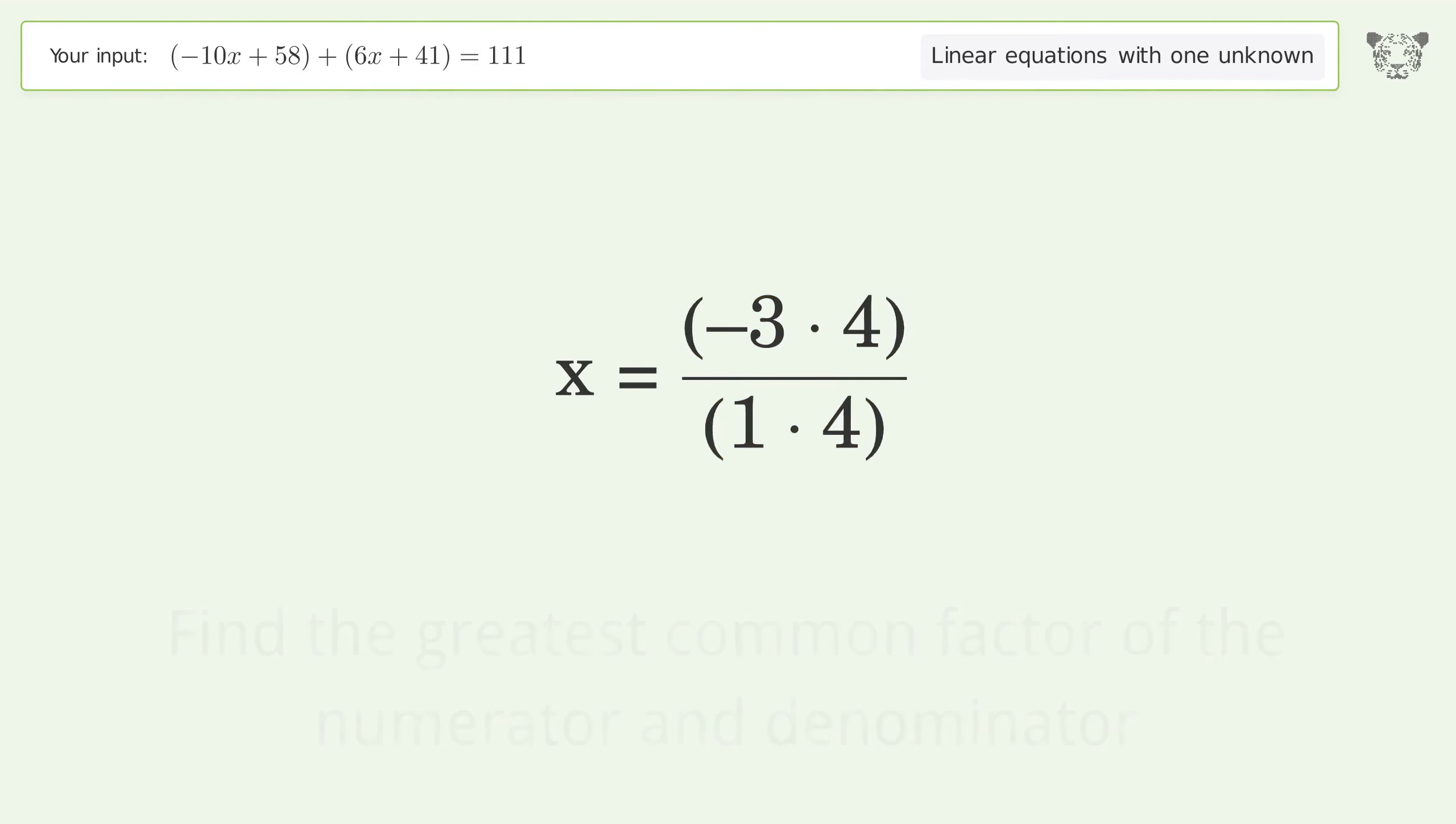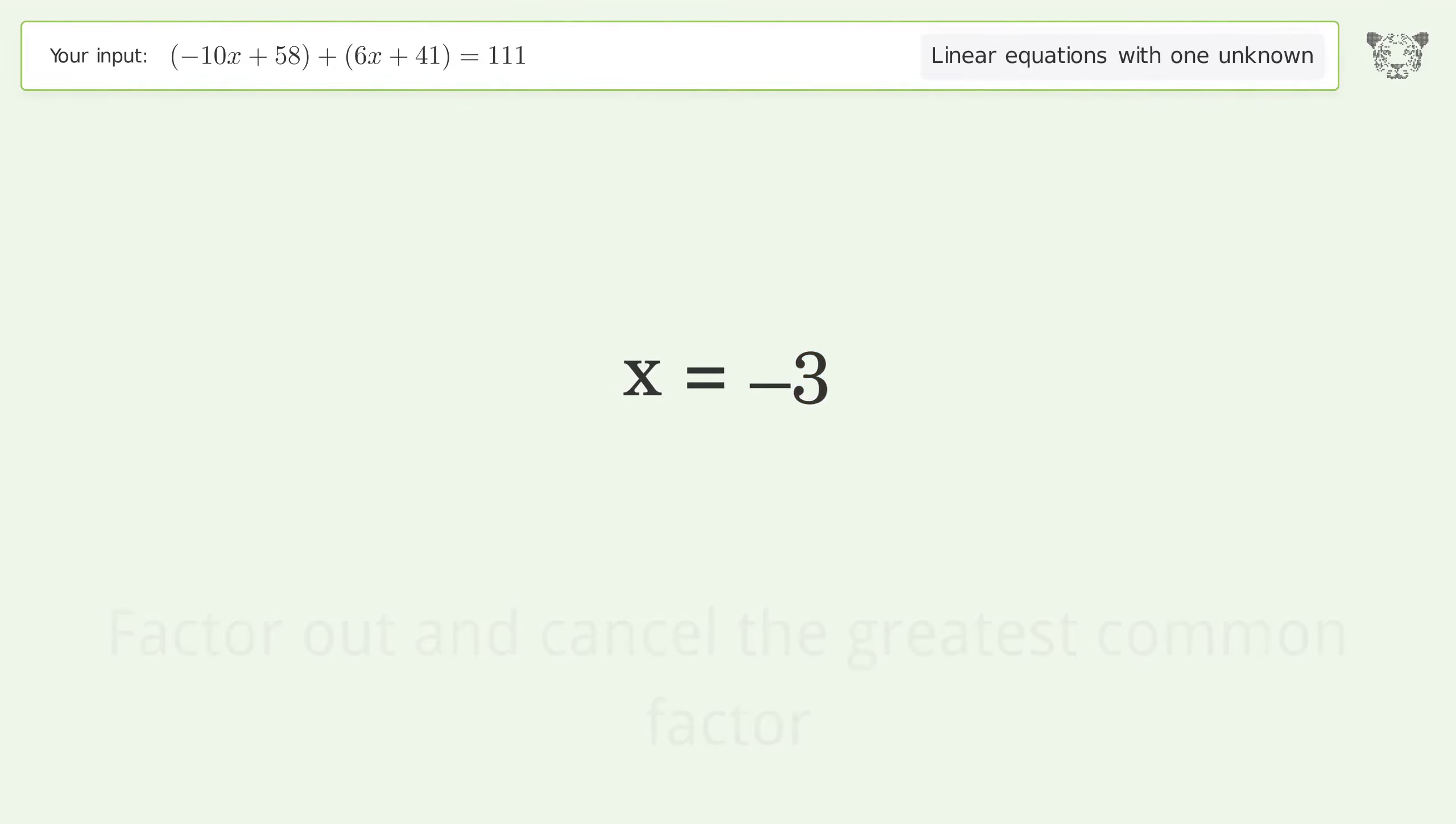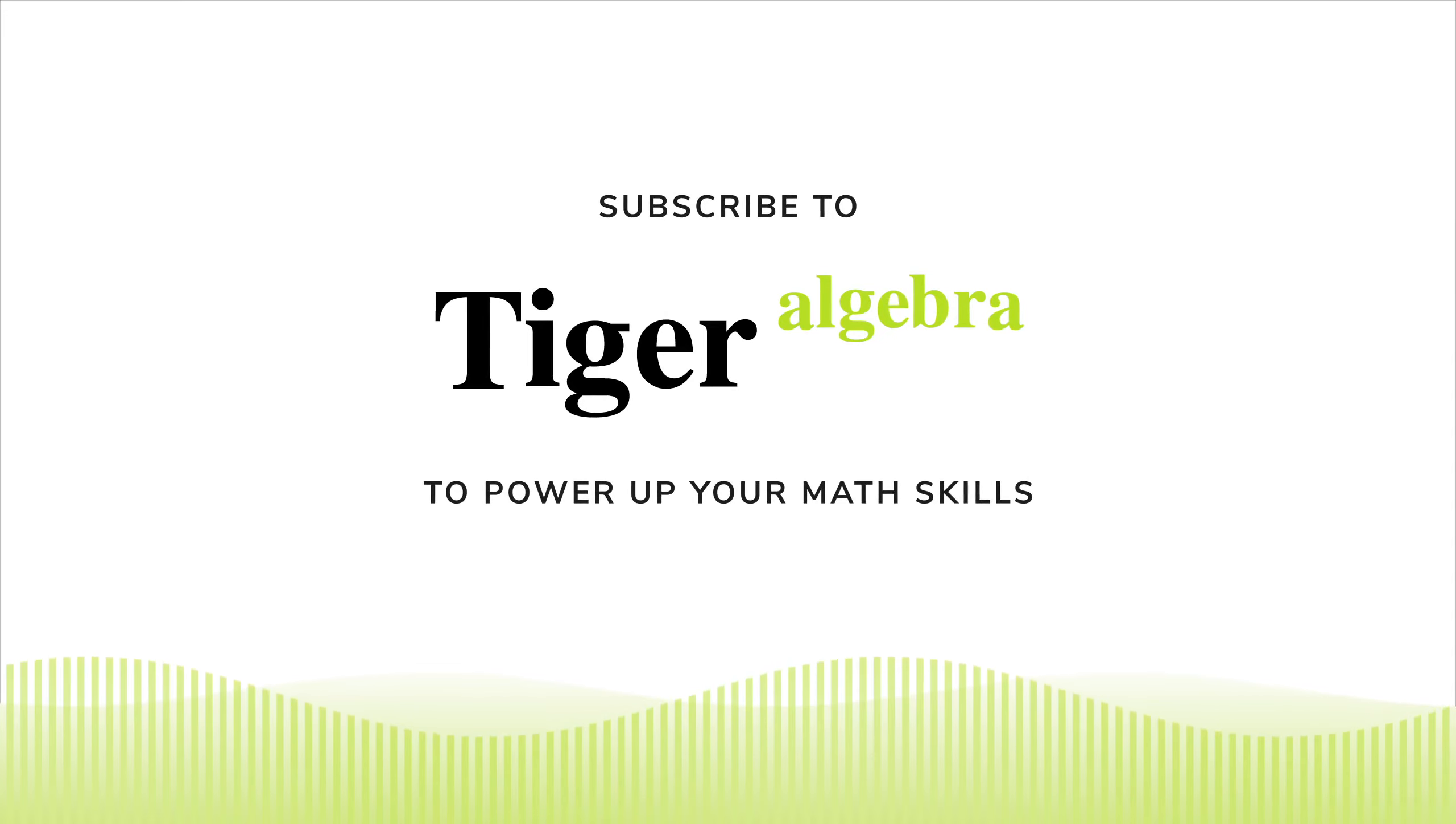Find the greatest common factor of the numerator and denominator. Factor out and cancel the greatest common factor. So the final result is x equals negative 3.